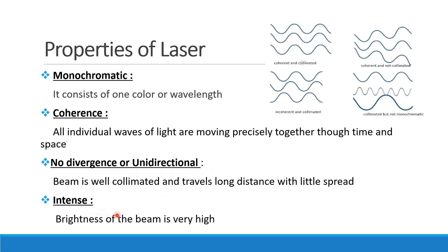Then, intense. We have light amplification — a weak signal is intensified to produce a laser action, resulting in an intense beam. So the four laser properties are: monochromatic, coherent, unidirectional, and intense beam.